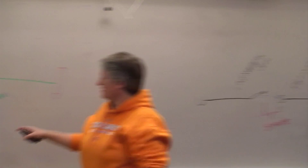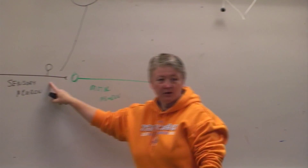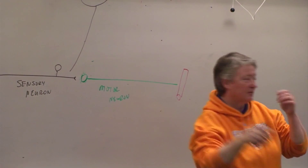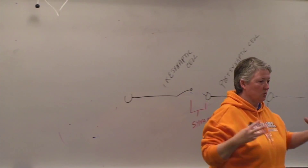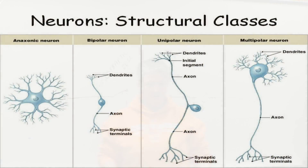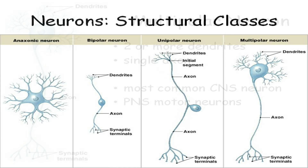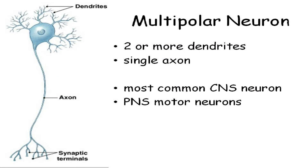There are actually four structural classes of neurons based on the anatomy of the cell. The one we've been talking about is the multipolar neuron.